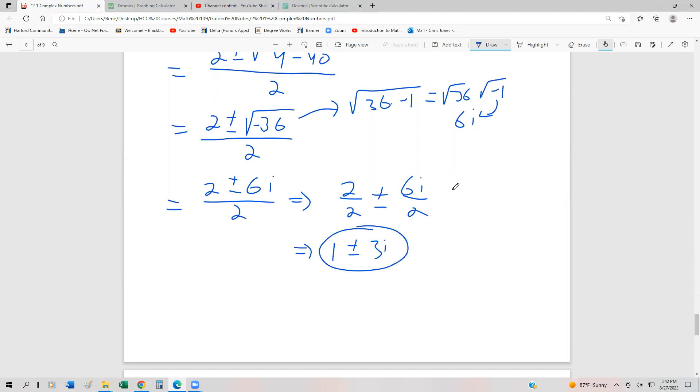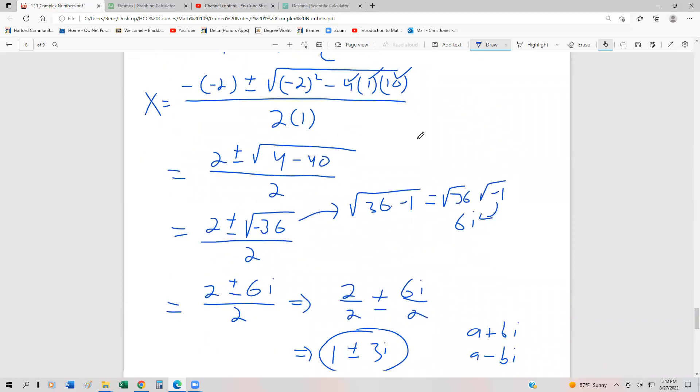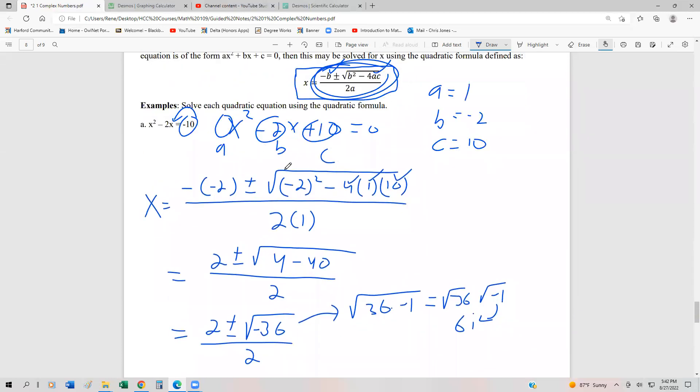Notice that this is called a conjugate pair. Always when we have complex solutions, we usually have one of the form a plus bi, and then the other one is a minus bi. Sometimes a is 0. That's not going to happen in these series, but it could happen that we only get complex roots. That's a pretty easy sort of problem to where there's not really much algebra. It's just computation.